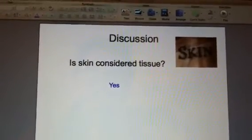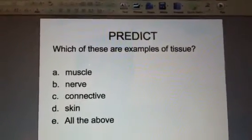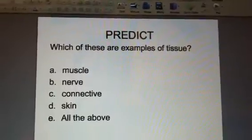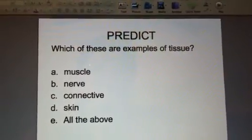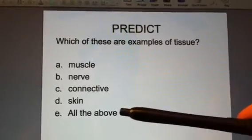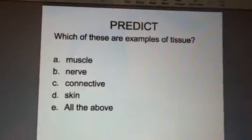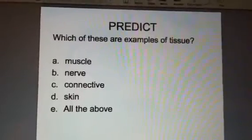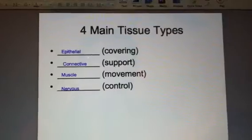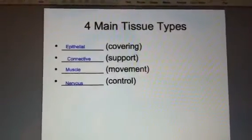In slide five, the question is: which of these are examples of tissues? If you selected E — all of the above — you're correct, because all of those things are examples of tissue. In slide six, we look at the main types of tissues that appeared in that predict question.